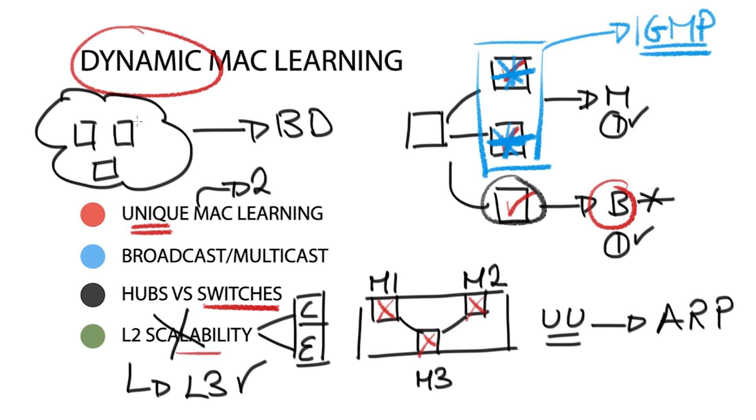To complicate matters further, promiscuous mode NICs see all traffic traversing for processing, as opposed to only processing traffic it's intended to receive. This method is usually used to intercept traffic for packet sniffing.